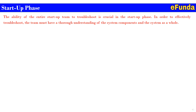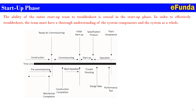During the startup phase, the ability of the entire startup team to troubleshoot is crucial. To effectively troubleshoot, the team must have a thorough understanding of the system components and the system as a whole. One can refer to the timeline diagram showing: construction, commissioning, startup, and operation. Starting with pre-commissioning — mechanical completion, construction completion, design rate, and perform testing — then ready for commissioning, followed by initial startup, after which specification product is achieved, and finally plant acceptance in the operation stage.